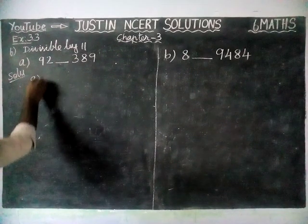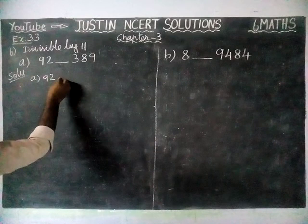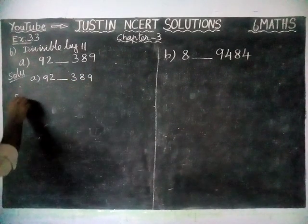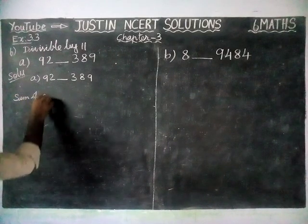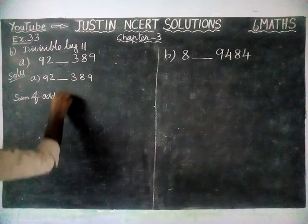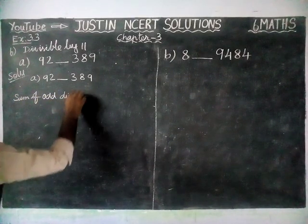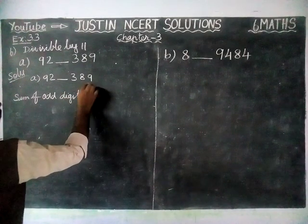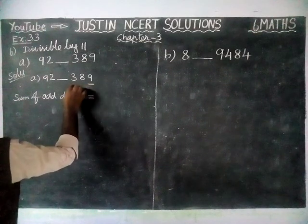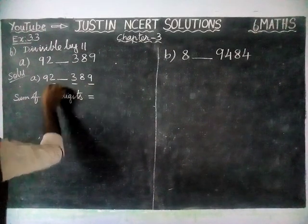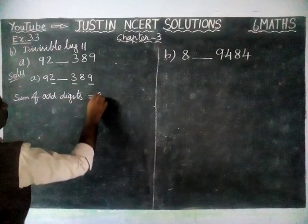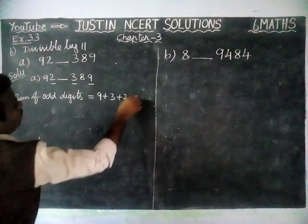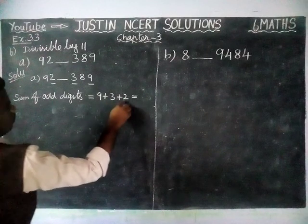Now first we are going to see option A: 9, 2, 3, _, 8, 9. The sum of odd-position digits — positions 1, 3, 5 — so 9 plus 3 plus 2 is equal to 9 plus 3 = 12, and 12 plus 2 = 14.